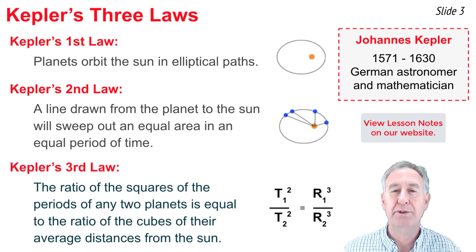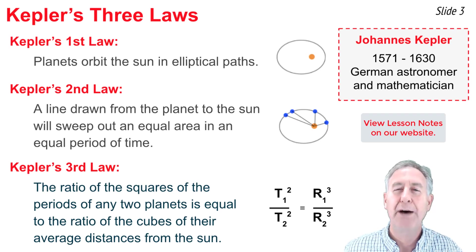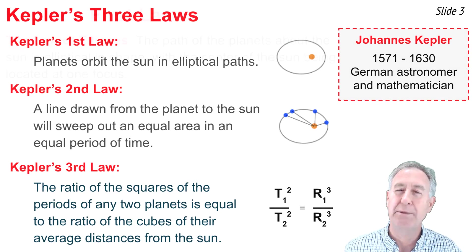And the Third Law claims that the ratio of the period squared for any two planets is equal to the ratio of the average distance that those planets make with the sun. I'll be talking about each of these laws in more detail.